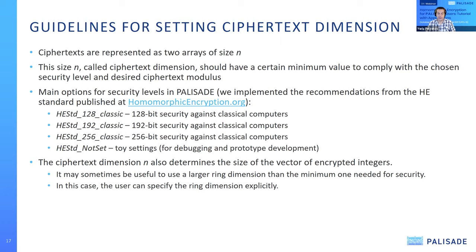The ciphertext dimension is also the size of the vector of encrypted integers. In certain SIMD computation scenarios, it may be desirable to use a ciphertext dimension larger than the minimum needed for security — perhaps to pack more integers. Palisade allows the user to specify the ciphertext dimension as long as it meets at least the minimum value required for the security level.